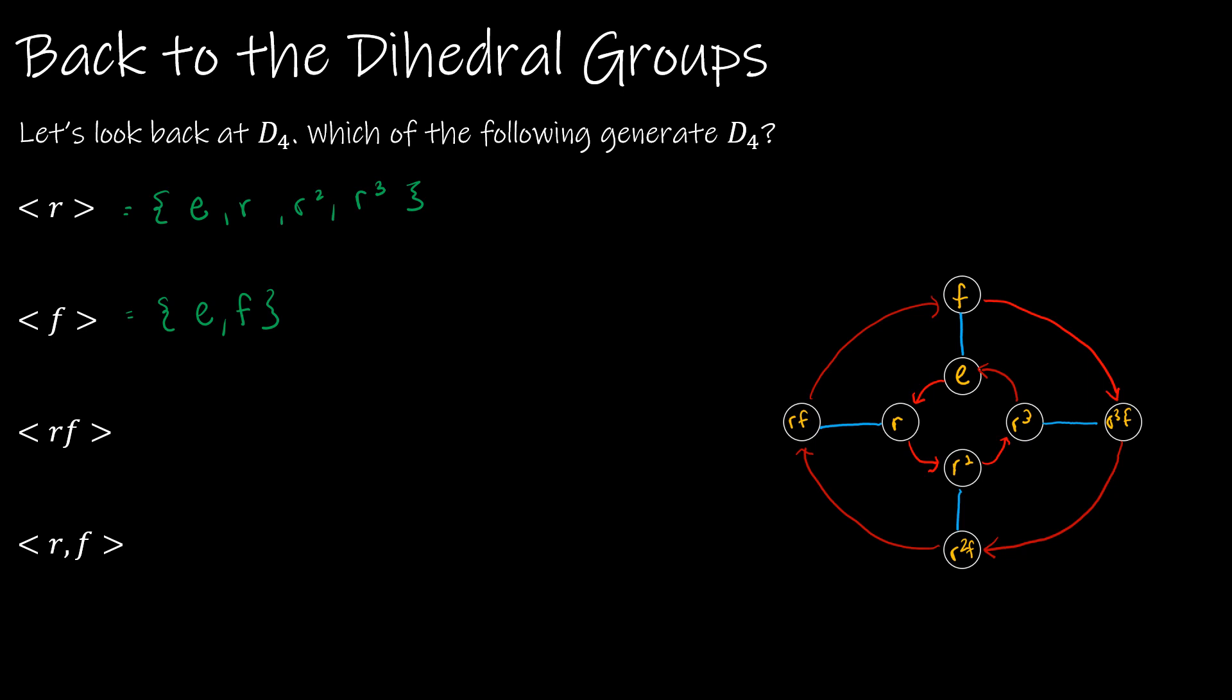What about RF? Well, if I take RF and not do it, I get the identity. If I take RF and perform the action, I get RF. And if I do RF again, that would be RF. Notice I'm back at the identity. So again, it is a subgroup, but it does not generate D4.